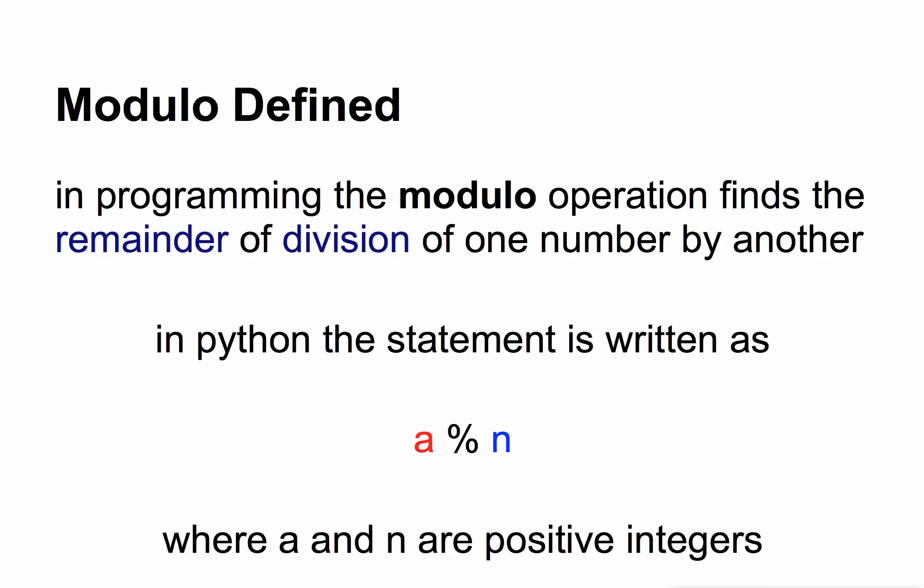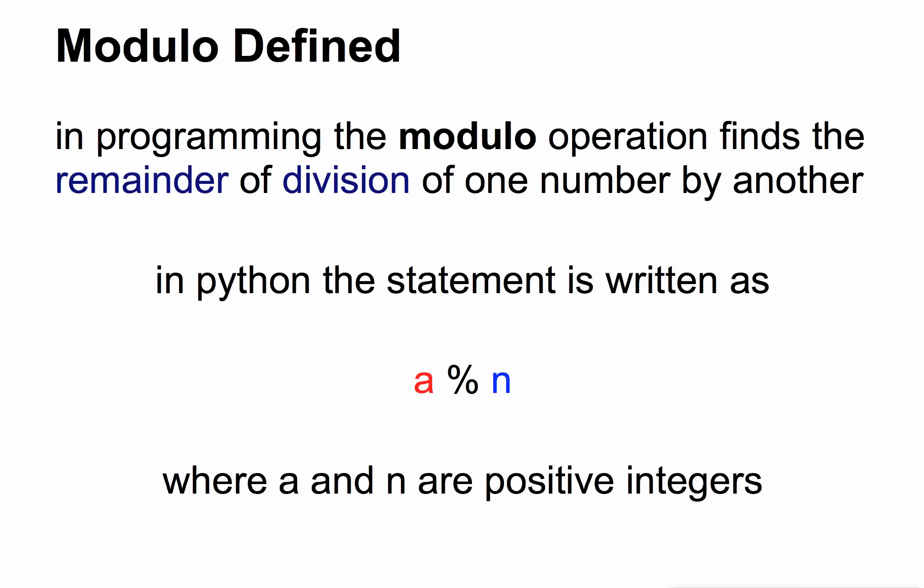So Wikipedia says that modulo is an operation that finds the remainder of division by one number by another. And so in Python it looks like A, and this percent sign means modulo, N. So some positive integer A divided by, and finding the remainder by N.